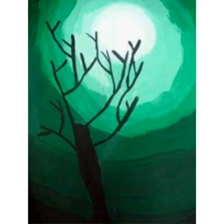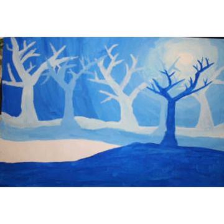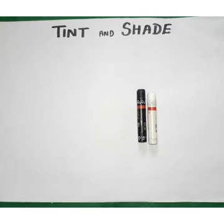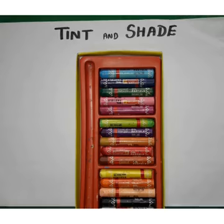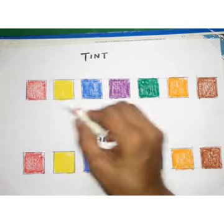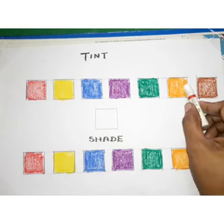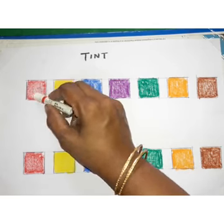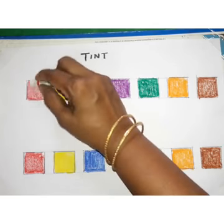Now let us see how to make a tint and shade of the pure color. Children, look at the mixing chart and get ready with the things: info size paper and crayons. Mix white with any color to get a lighter shade of the color, called tint color.